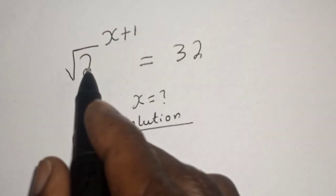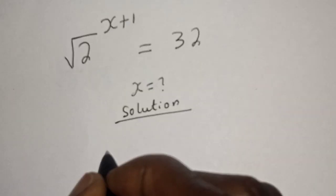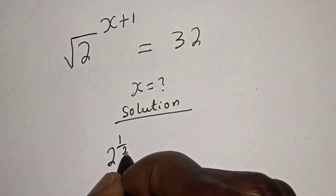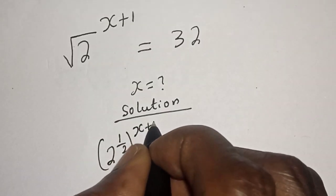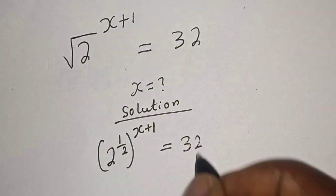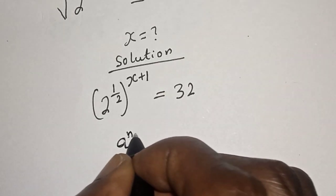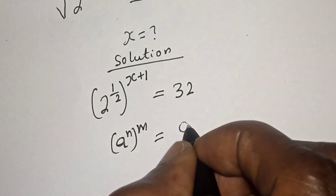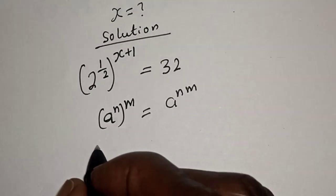Square root of 2 raised to power x plus 1 can be written as 2 raised to power 1 over 2, raised to power x plus 1, which is equal to 32. Remember this rule: if you have a raised to power n, raised to power m, this is equal to a raised to power n times m.